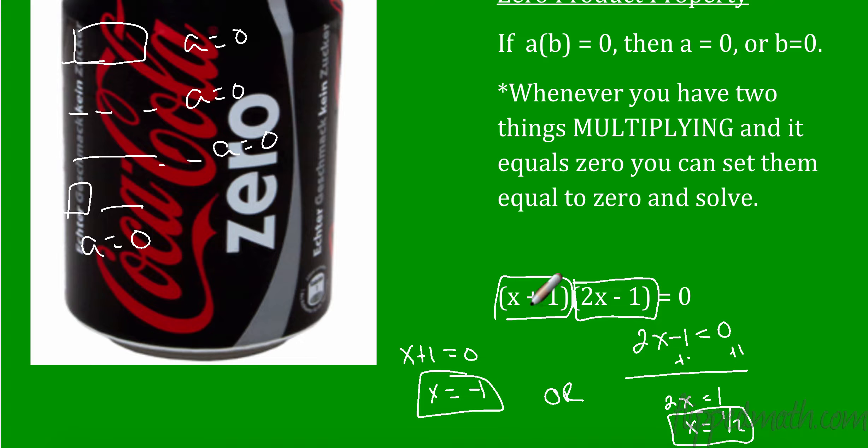In other words, if I were to plug negative 1 in, negative 1 plus 1, this whole thing would be 0. Then 0 times that would equal 0. Likewise, if I were to plug a half into here, 2 times a half is 1, 1 minus 1 is 0, 0 times that equals 0. The zero product property is really, really big. And you can see where we're going with this. We're going to solve things by factoring them and then setting them equal to 0.